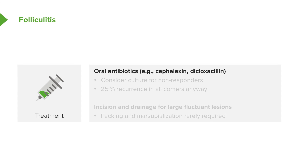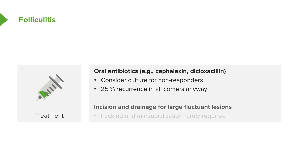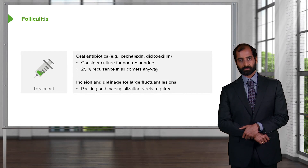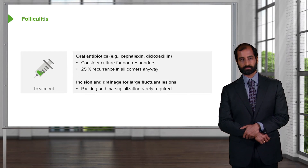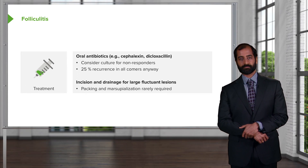Management of folliculitis includes oral antibiotics such as dicloxacillin or cephalexin. Consider culture for those that are non-responding, and note that there is a 25% recurrence rate overall. Incision and drainage is indicated for large fluctuant lesions — if the folliculitis goes on to become an abscess, drainage is necessary. Packing and marsupialization are rarely required, so do not choose these as answer choices; they would be distractors for folliculitis.